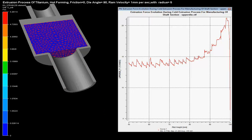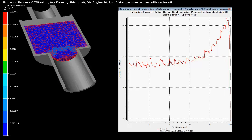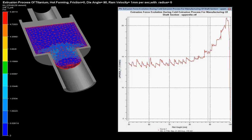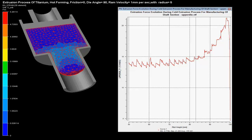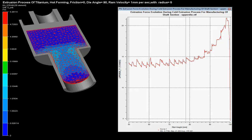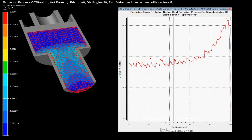Extrusion forces with respect to billet height are shown over the graph. These forces are maximum when there is a sudden change in the area of cross section of the billet.